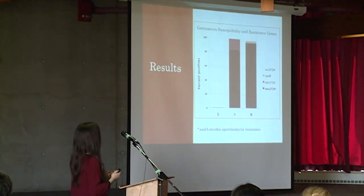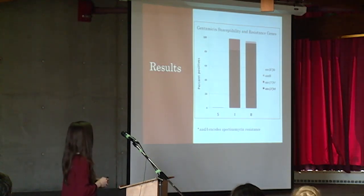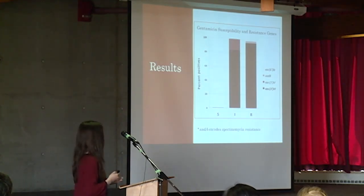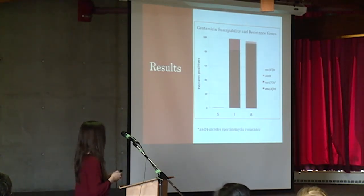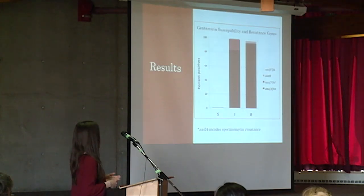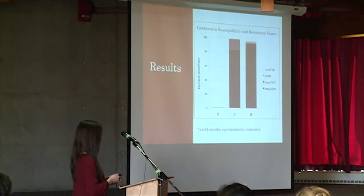This graph is a comparison of gentamicin susceptibility and resistance genes. For isolates that were intermediate or resistant towards gentamicin, the vast majority carried the gene AAC36. Those isolates that were susceptible to gentamicin barely carried this gene.